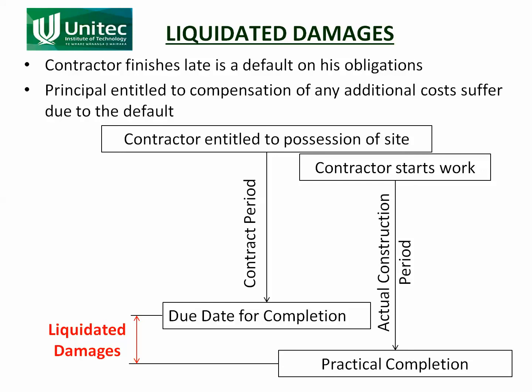Those costs are estimated at the beginning of the contract. Liquidated damages is part of the contractual agreement — the contractor agrees to pay the principal a certain amount of money for every week over that he runs. That is part of the agreement. So if he does run over, then he has to pay it. In fact, what happens is the money is deducted from money that is owed to him.